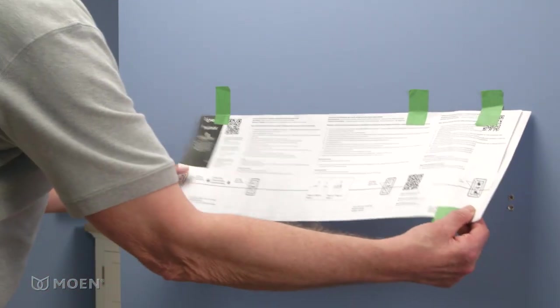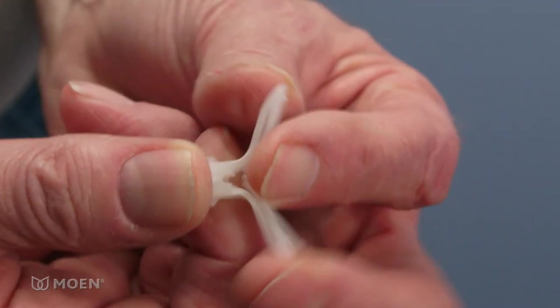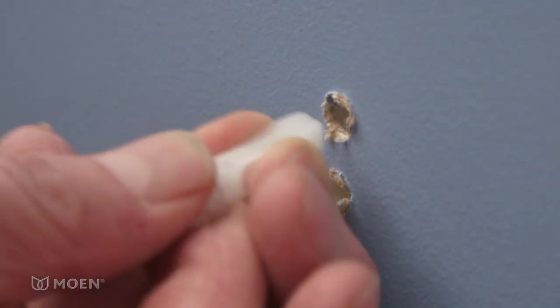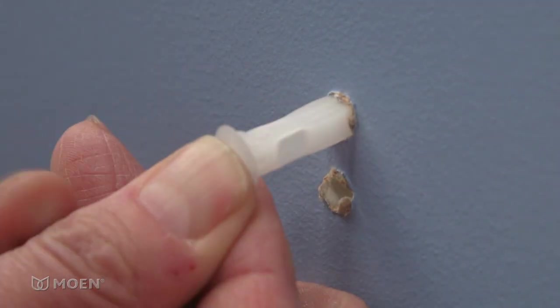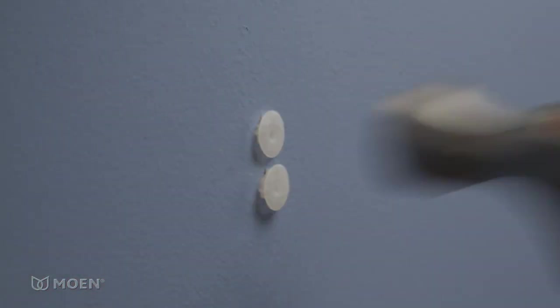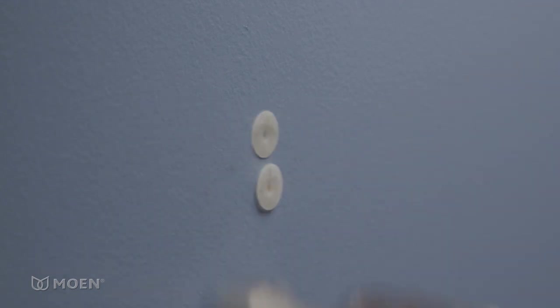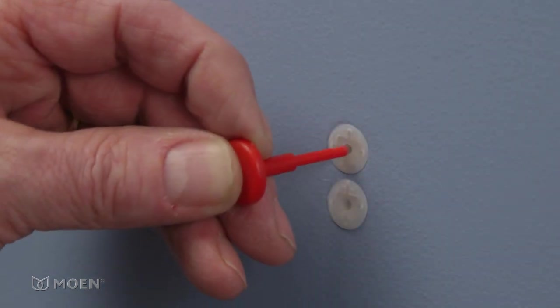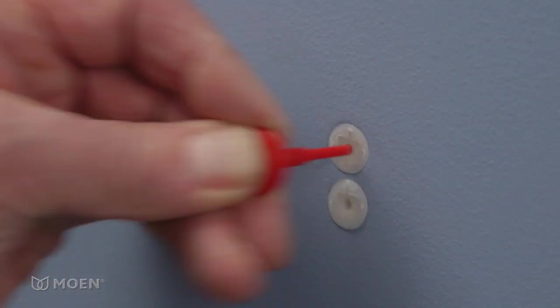Remove the mounting template from the wall. Fold the ends of each anchor together and insert them into the holes. Lightly tap the anchors with a hammer until flush with the wall. Then insert the red plastic pin into each anchor to activate.